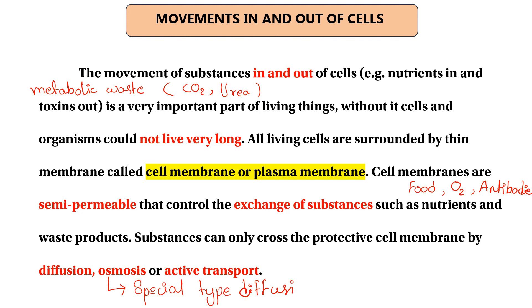The last one is active transport. Active transport uses energy. Active transport moves oxygen and nutrients — the body's minerals can also use active transport to move substances into and out of the cell.